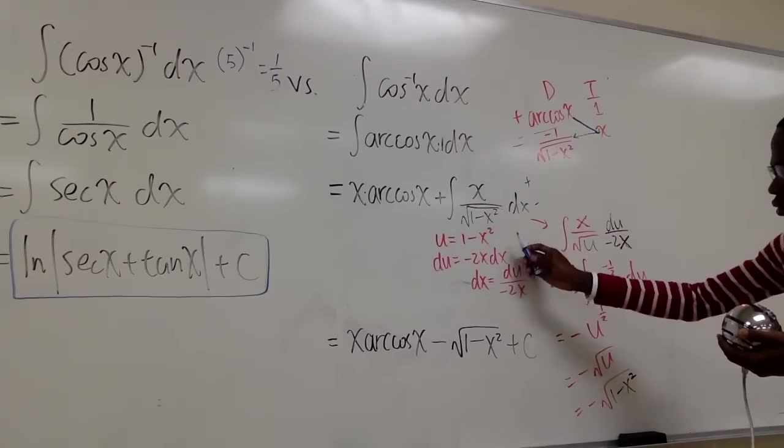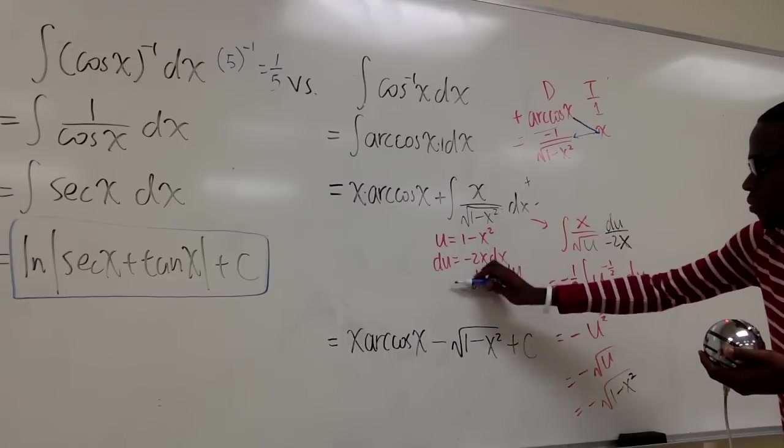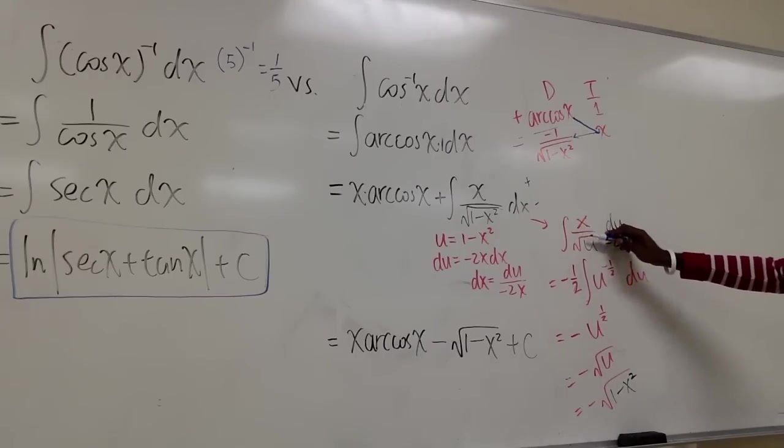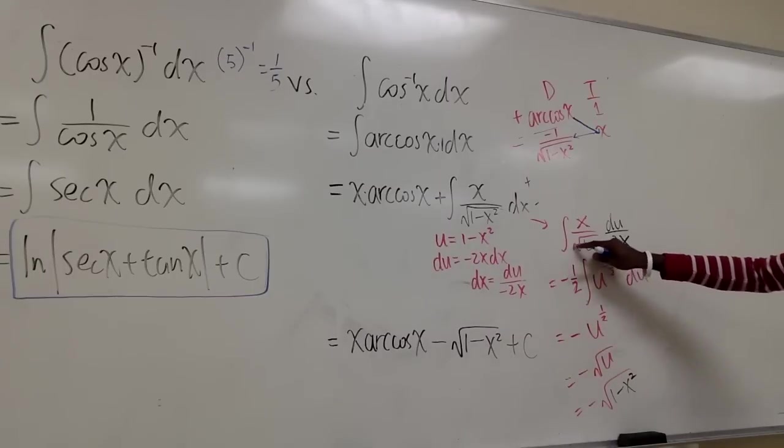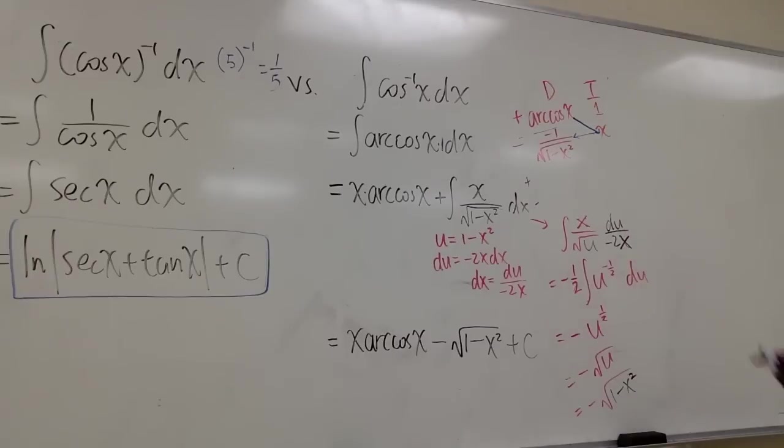And now we just solve for dx. dx is going to be equal to du divided by negative 2x. And now we just plug everything in. The integral of x, we'll replace 1 minus x squared with u, which is radical u. And dx is now du over negative 2x, which is what we have here.